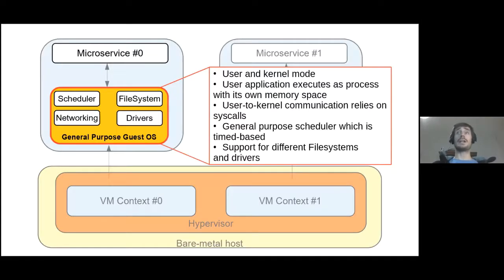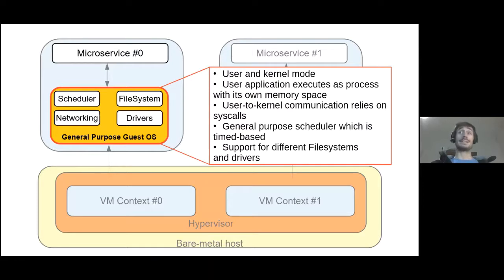Let's see what features a general-purpose OS provides. Generally speaking, an operating system has a scheduler, file system, networking, and some drivers. There is a separation between user and kernel space. The microservice executes as a user process with its own memory space, and the communication between user and kernel is based on syscalls.